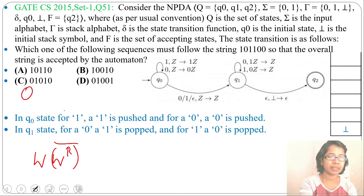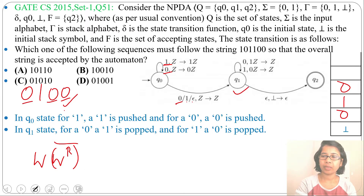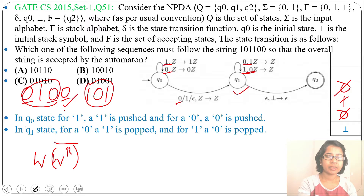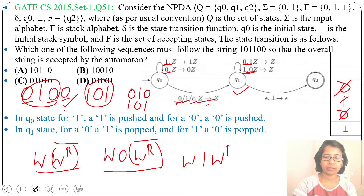Let's check another string: 0, 1, 0, 0. Push 0, push 1, push 0. For the next 0, skip via epsilon and go to Q1 state. At Q1: input 1 pops 0, input 0 pops 1, input 1 pops 0. The first part is 010, its reverse is 010, and complement is 101. So the language is W·0·W-reverse-complement. By epsilon we skip, giving W·W-reverse-complement. By 1 we can also skip, giving W·1·W-reverse-complement.